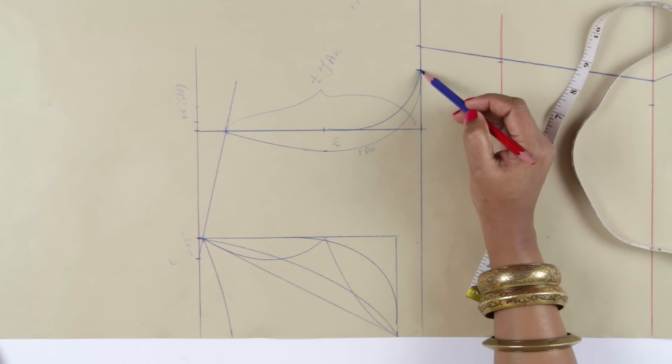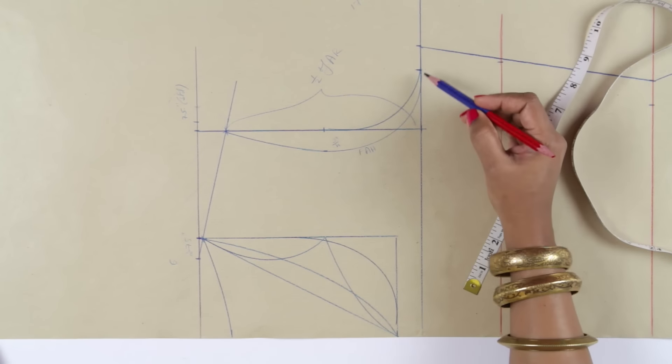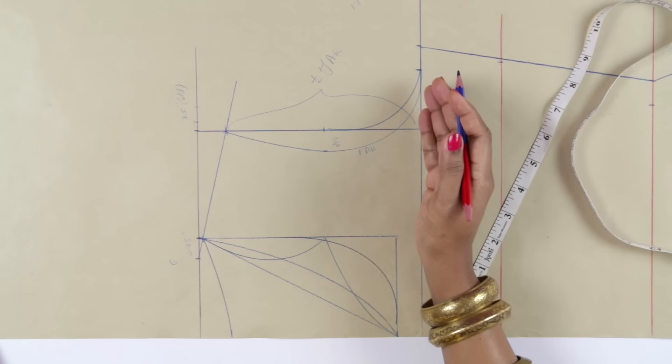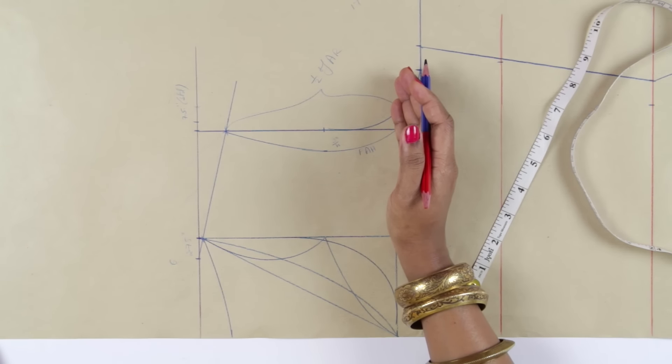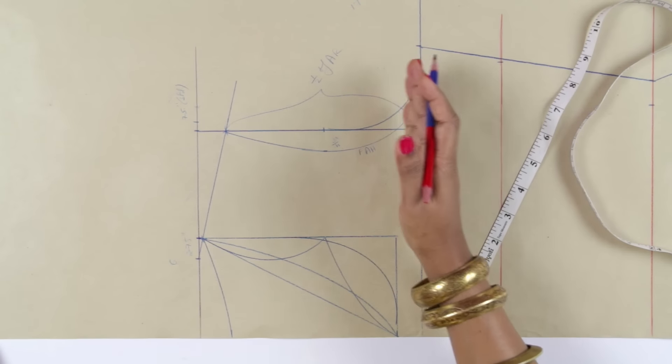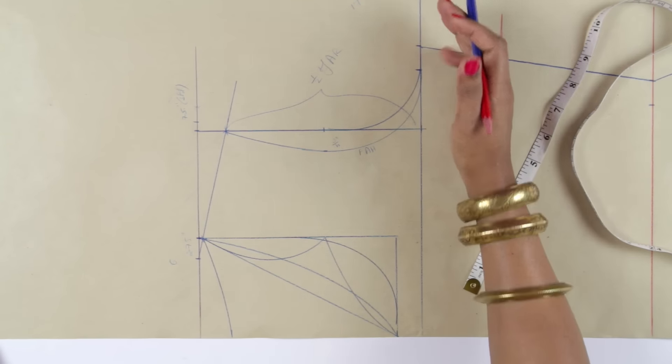In the same way, if you are getting excess here, that is half your armhole plus ease plus more than that, that means you need to shift your chest line upwards and redraw the armhole to make the armhole a little smaller so that the excess is removed.